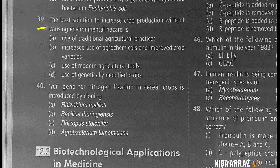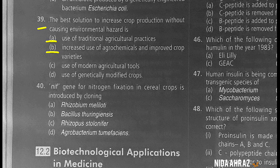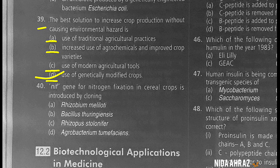The best solution to increase crop production without causing environmental hazard is use of genetically modified crops. The correct choice is option D.